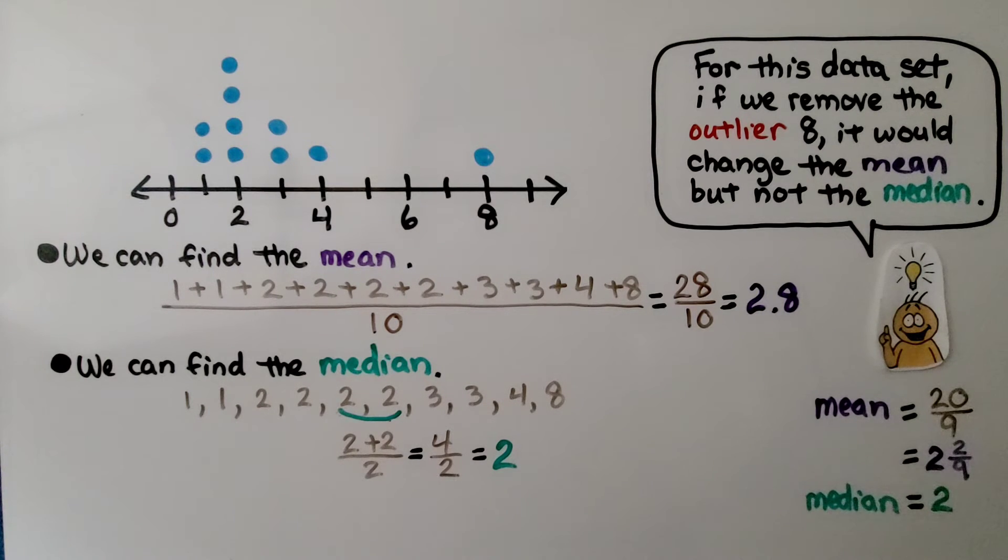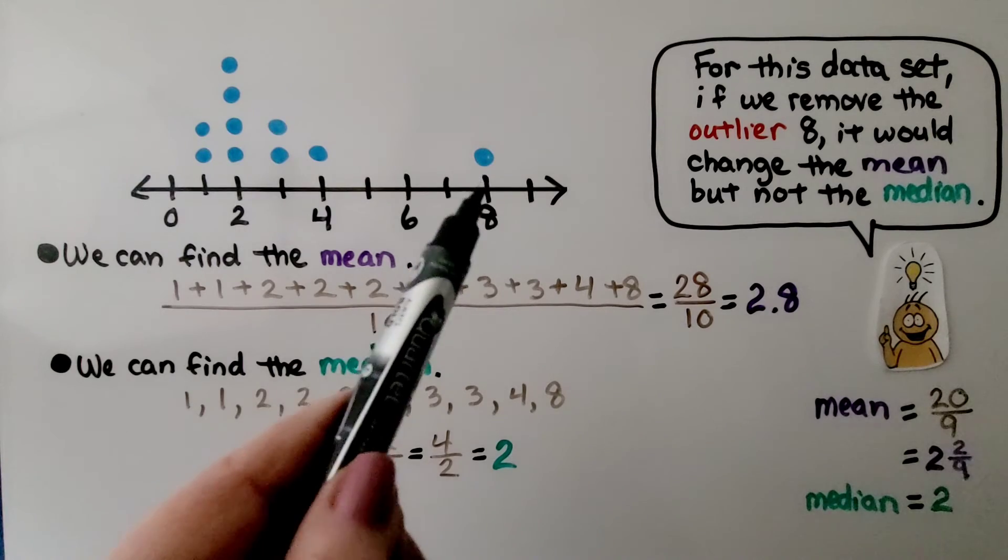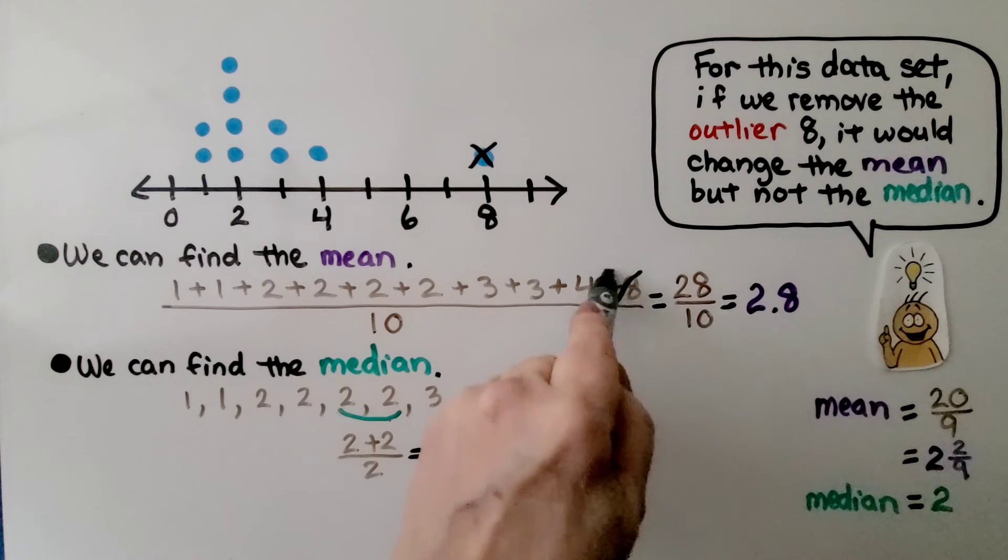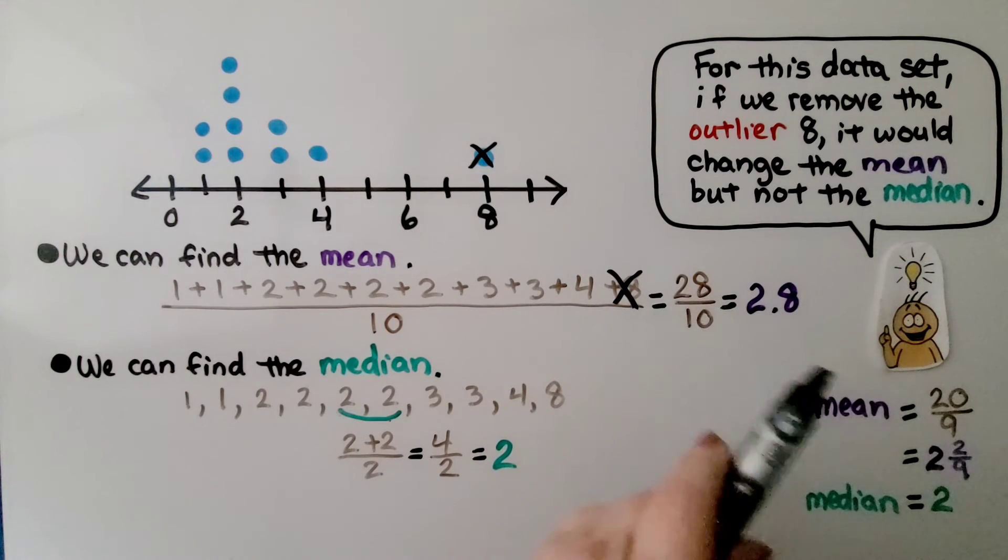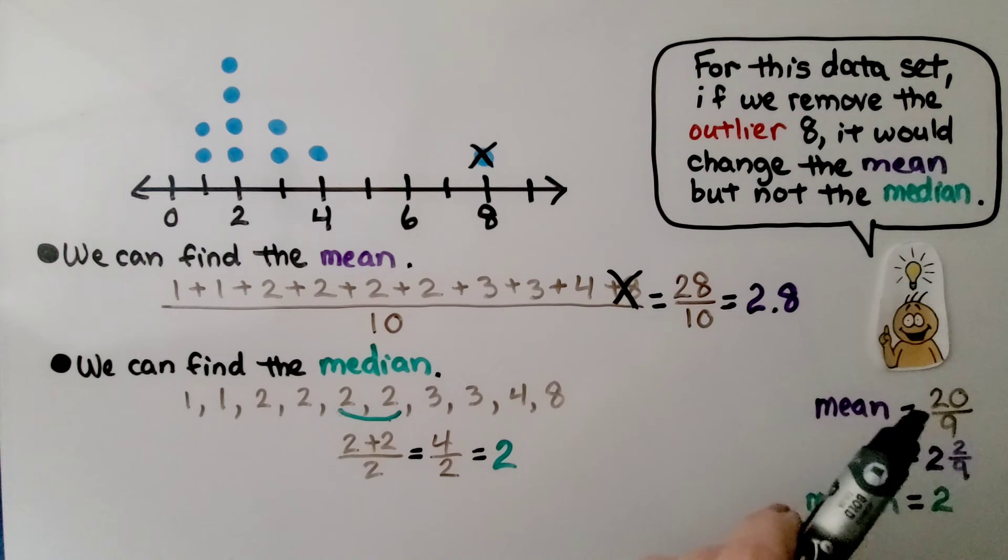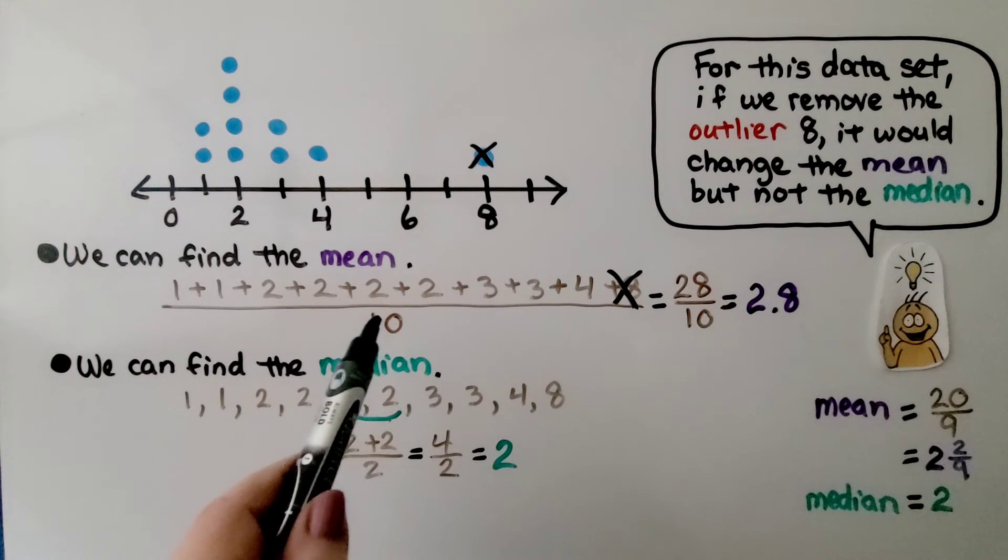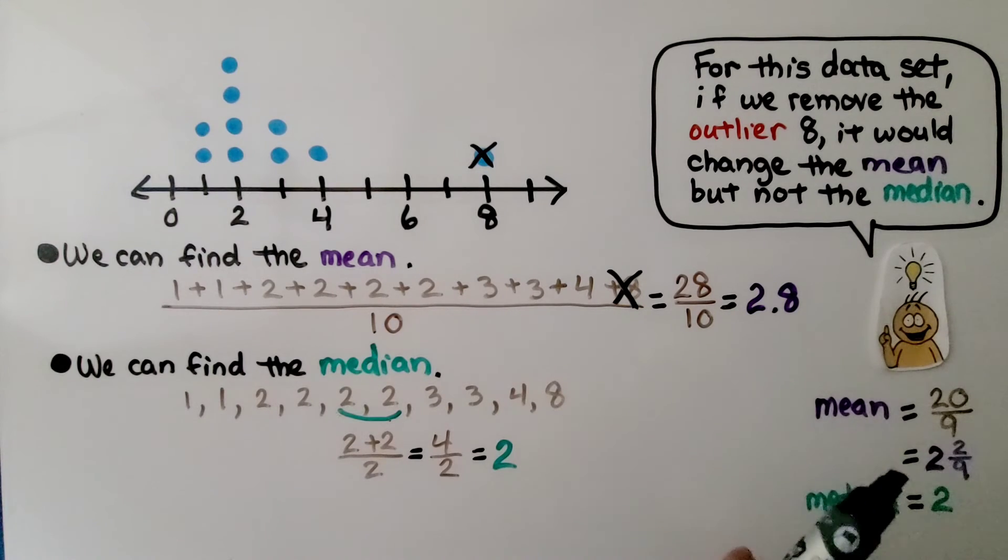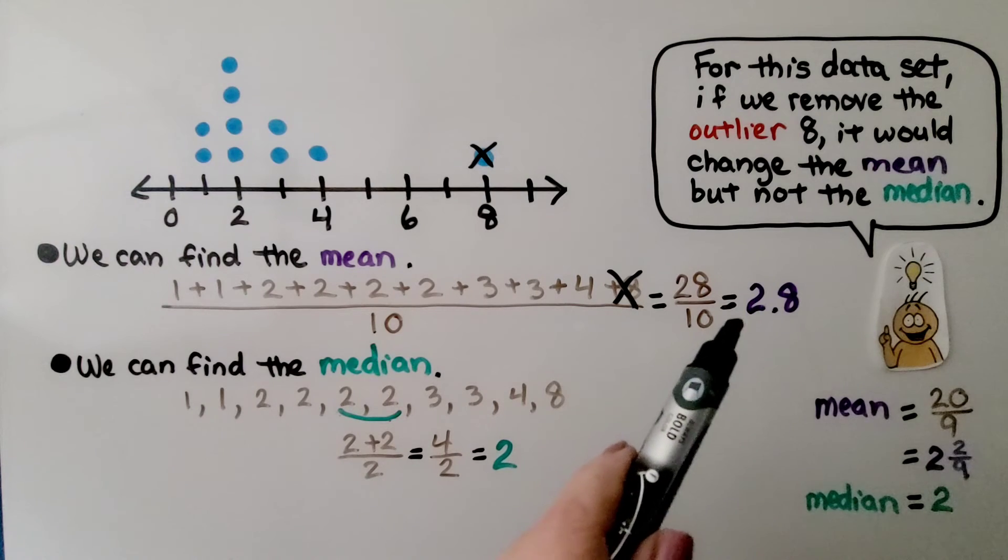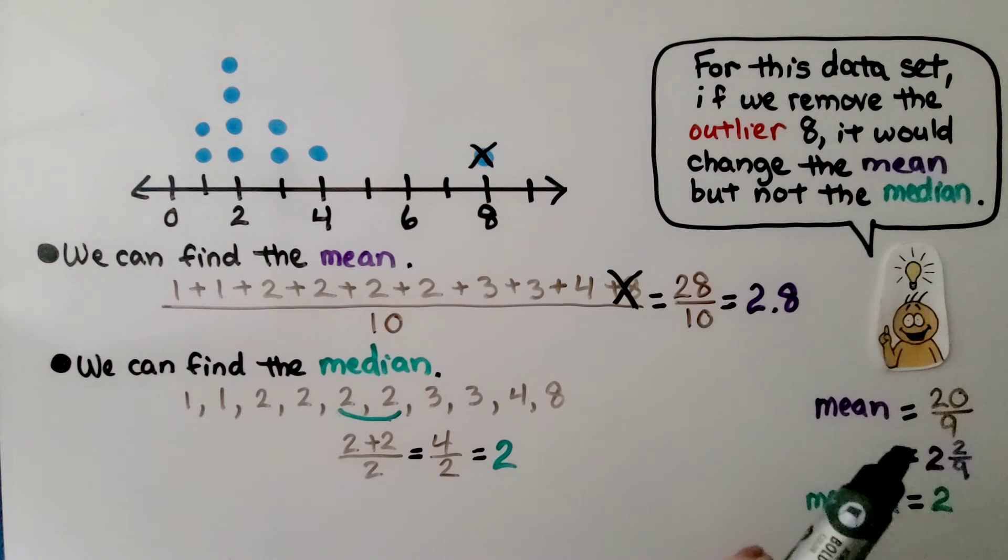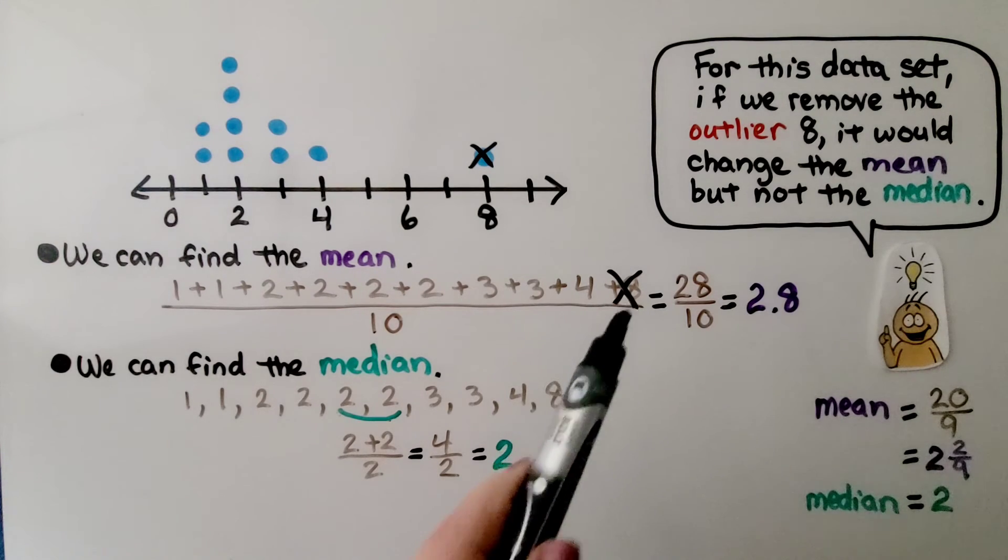Now, for this dataset, if we remove the outlier 8, it would change the mean, but not the median. If we got rid of this 8 and removed it, then we'd have to remove this 8, which means we wouldn't have 28 tenths anymore. We would have 20 ninths. Because we took the 8 away, it's now 20, but because we also took the 8 away, we don't have 10 digits anymore, we have 9 digits. That would be 2 and 2 ninths. So we'd go from almost 3, 2 and 8 tenths is almost 3, down to just a little bit more than 2. So the mean changed when we took away that outlier.